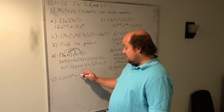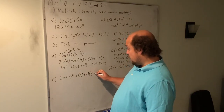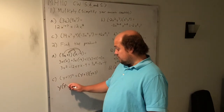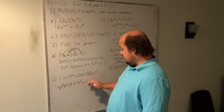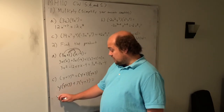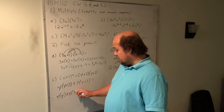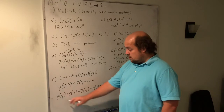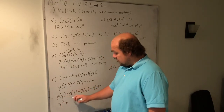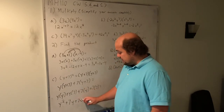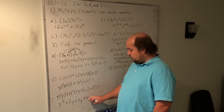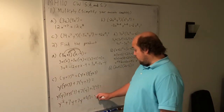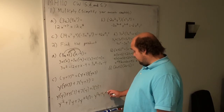Same idea here with y plus 7. I'd rather you just write it out as y plus 7 times y plus 7. So this becomes y times y plus 7 plus 7 times y plus 7, which gives y times y plus y times 7 plus 7 times y plus 7 times 7. y times y is y squared. 7 times y is 7y. 7 times y is 7y. And 7 times itself is 49. Combining the like terms in the middle, 7y and 7y combine to give me 14y. So I wind up with y squared plus 14y plus 49 as my final answer.